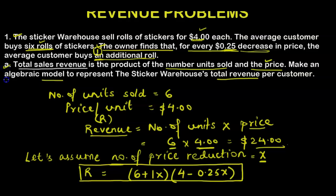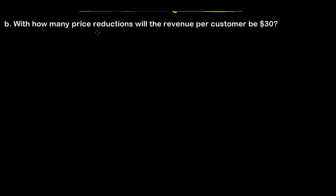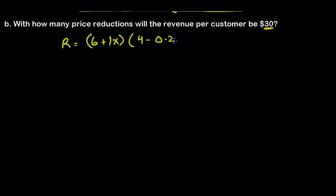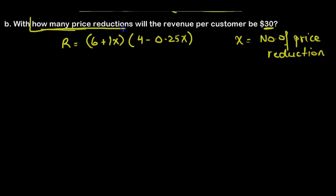Let's go over Part B: with how many price reductions will the revenue per customer be $30? We know the revenue equation is (6 + x)(4 − 0.25x). Here x is the number of price reductions. We need to find how many price reductions give a revenue of $30, so we substitute revenue as 30 and solve for x.